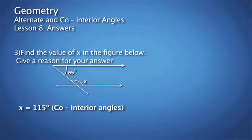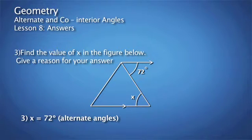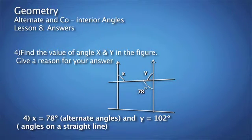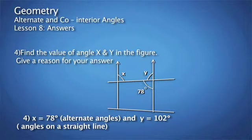Question 3: What is the value of angle X? In that figure, angle X is alternate to the angle of 72 degrees, so angle X is equal to 72 degrees. Question 4: Find the value of angle X and angle Y. Angle X is equal to 78 degrees because they are alternate angles. And angle Y is equal to 102 degrees because it is co-interior with angle X, which is 78 degrees.